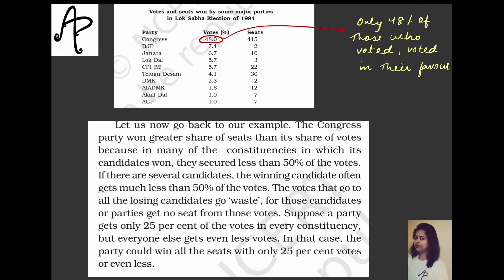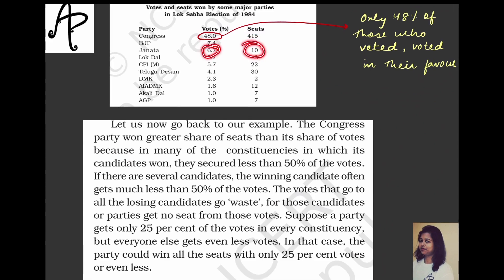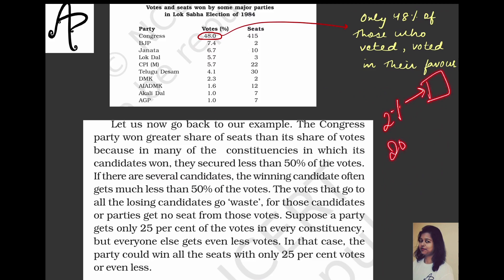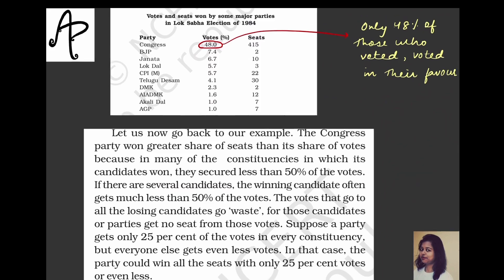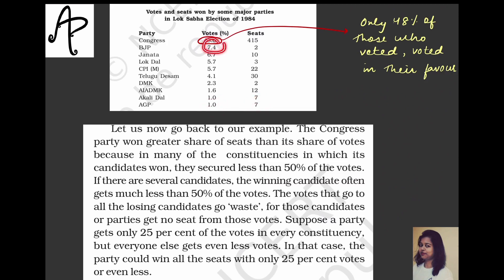You see that there is no proportion between vote percent and seats. A party with 7.4% got only 2 seats while one with 5.7% or 4.1% got 20–23 seats. Congress won a greater share of seats than its share of votes because in most constituencies its candidates won without crossing 50% — they only got more than the others. If several candidates contest, the winner often gets much less than 50%.